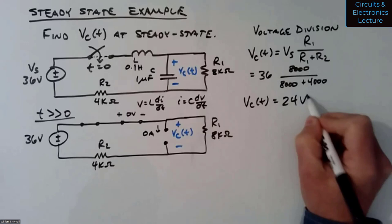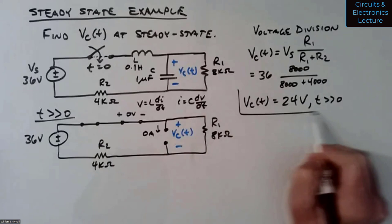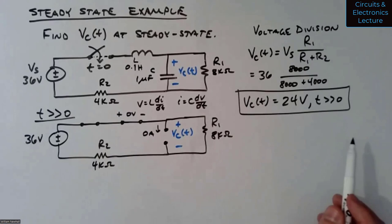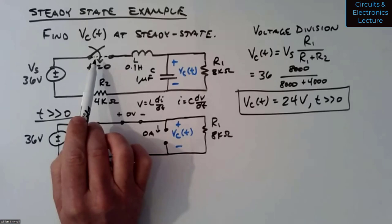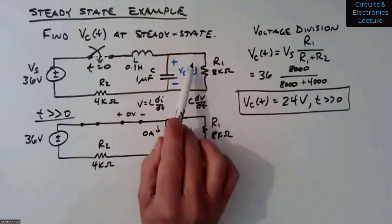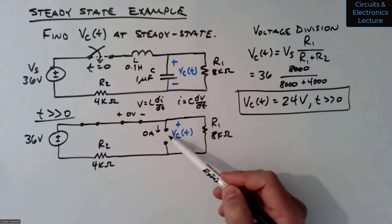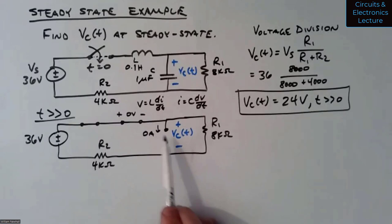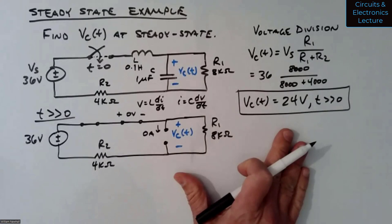That's an example: when you have a first-order or second-order circuit and some sudden change happens like a switch closing, and then you wait a long period of time until the transient voltages and currents die out, the circuit looks like this with the inductors replaced by shorts and the capacitors replaced by opens. Then you can solve the circuit using those simpler equivalent structures. We'll use this as a step in the second approach to solve for the transient response of first-order circuits.